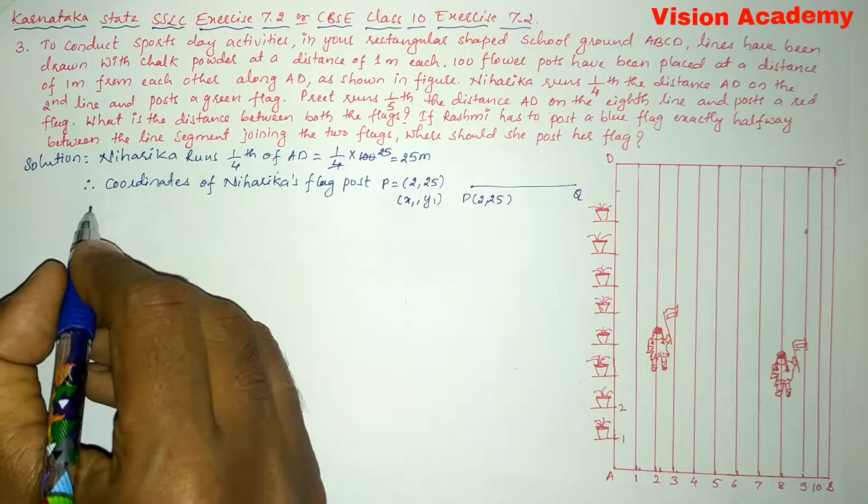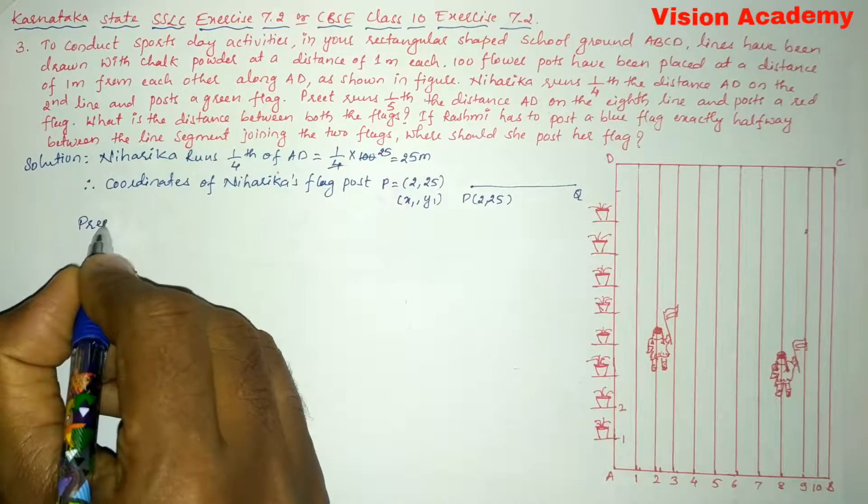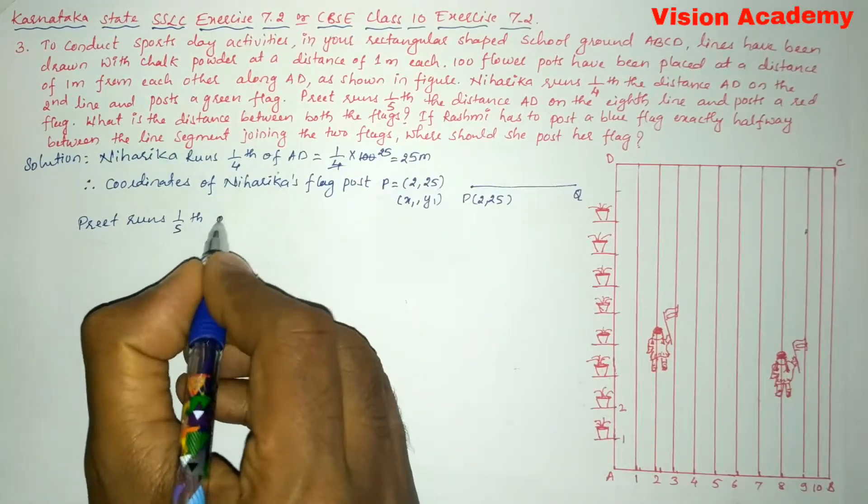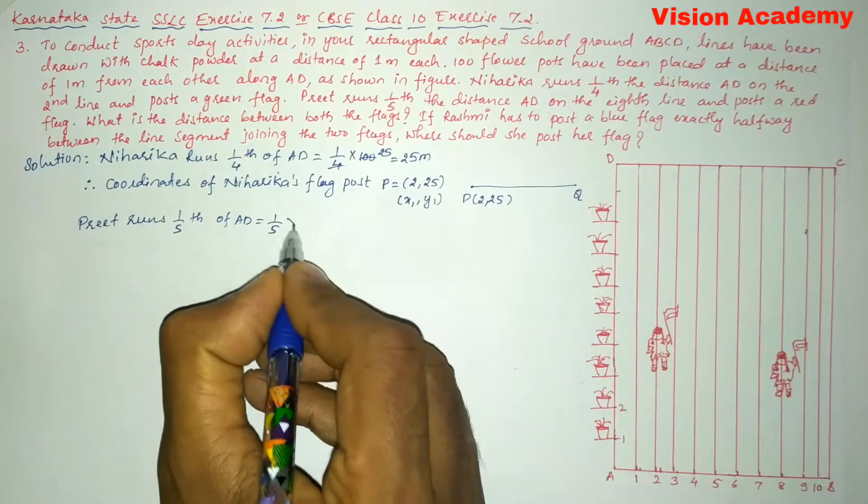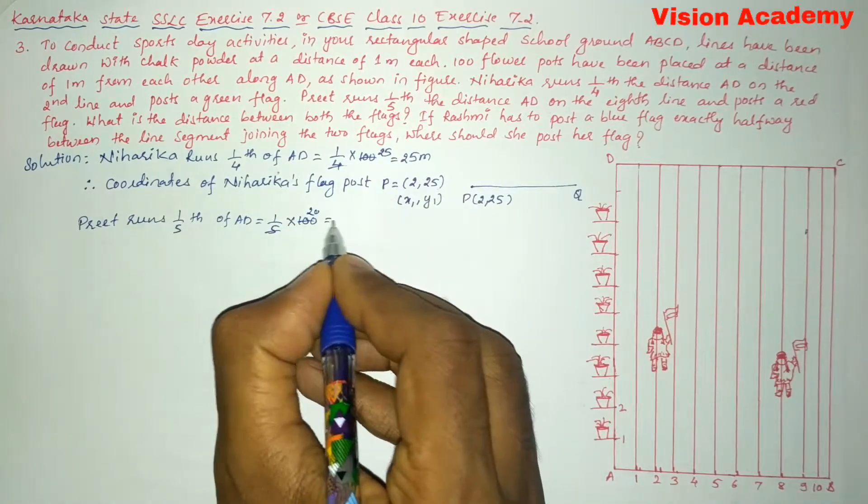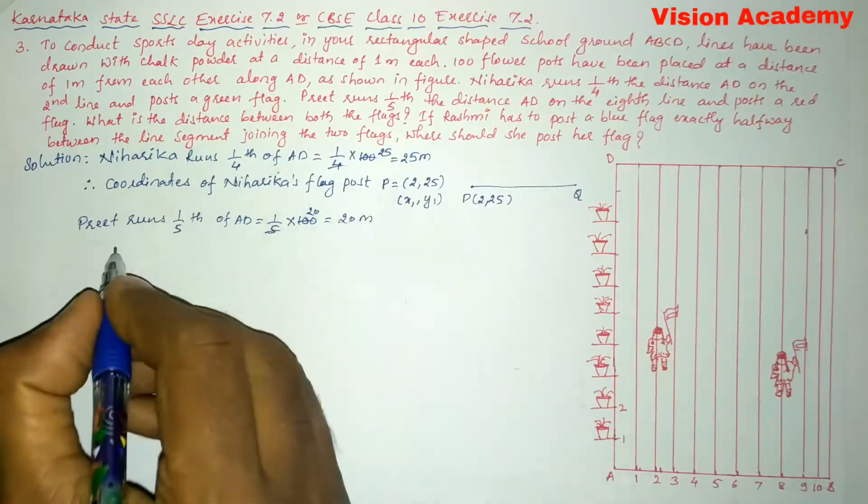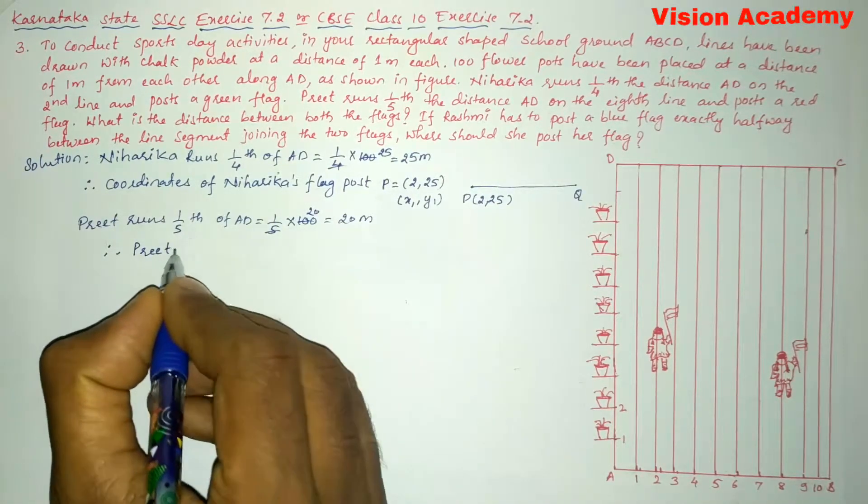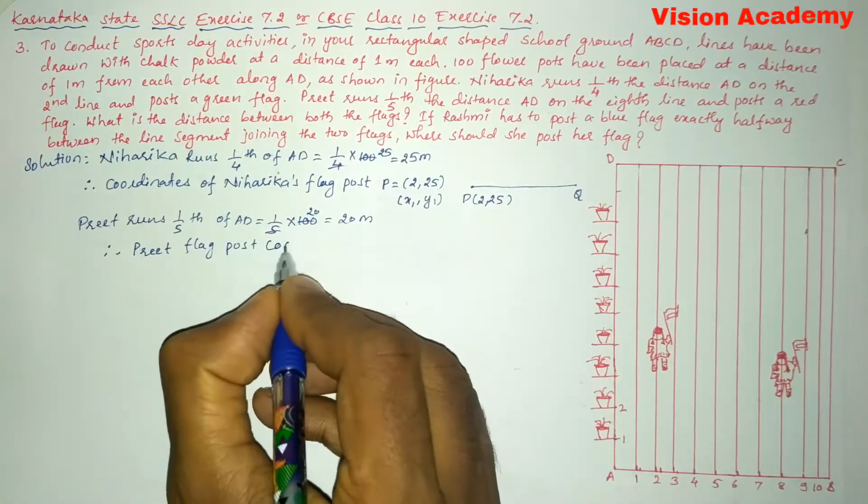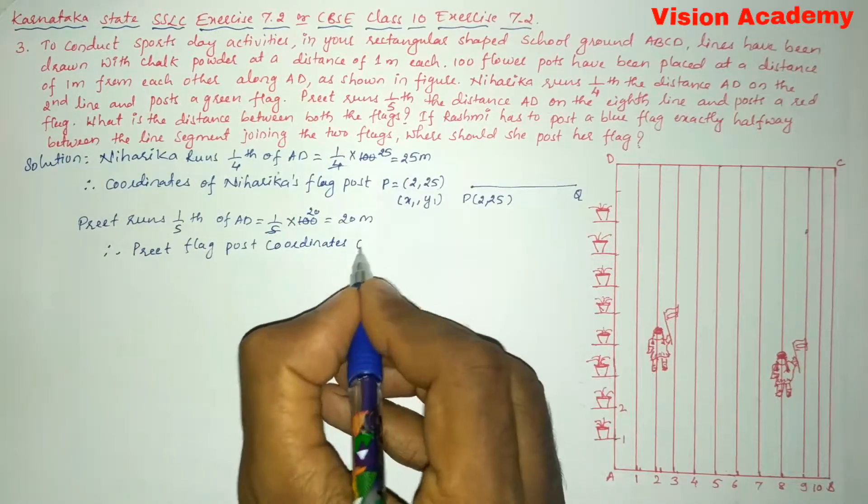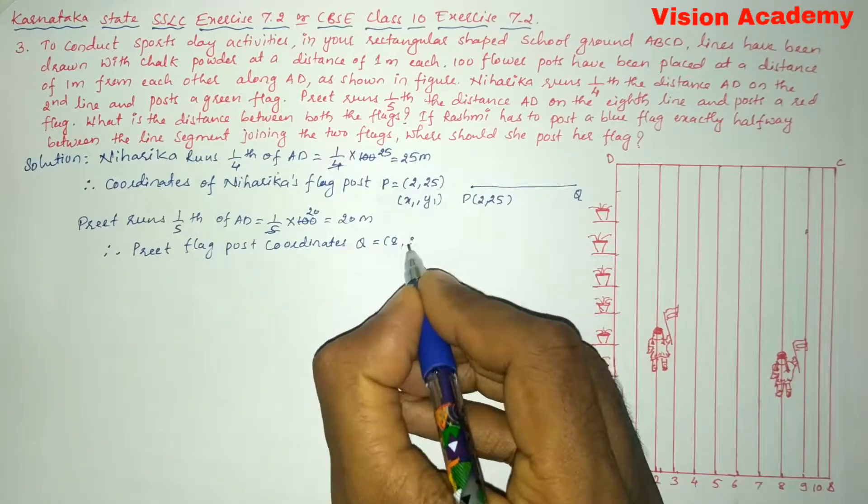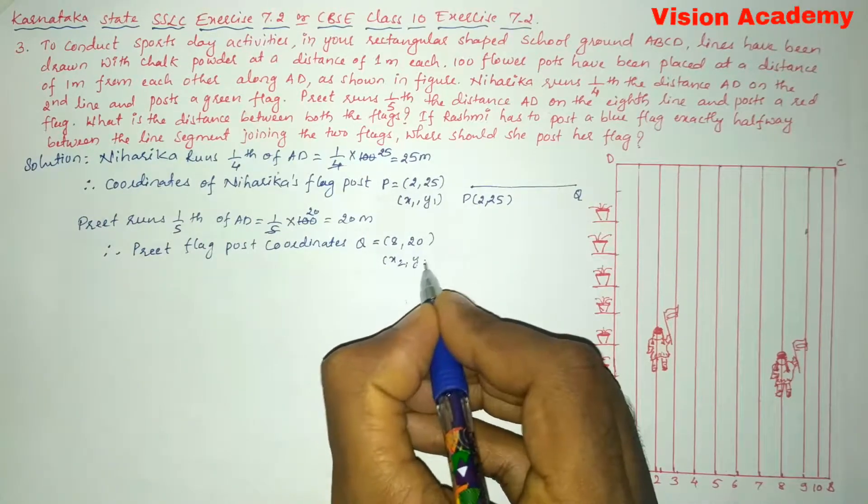Preeti runs one-fifth of AD is equal to one-fifth of 100. Five times twenty equals one hundred, so here it is 20 meters. Therefore, Preeti's flag post coordinates Q is equal to (8, 20). Here this one is x2 comma y2.